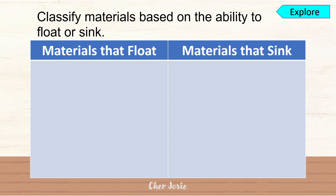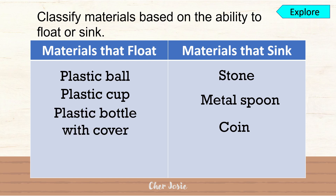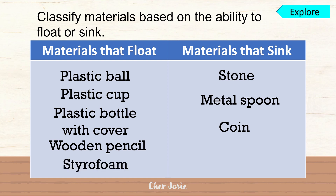Let's check your answers in our experiment. Classify the materials based on the ability to float or sink. Plastic ball floats. Stone sinks. Metal spoon and coin also sink. Plastic cup floats. Plastic bottle with cover floats. Wooden pencil and styrofoam also float.